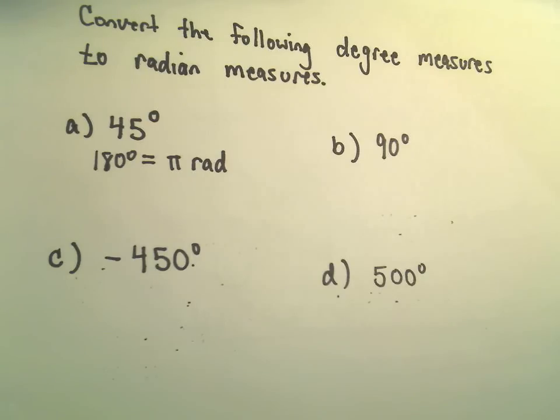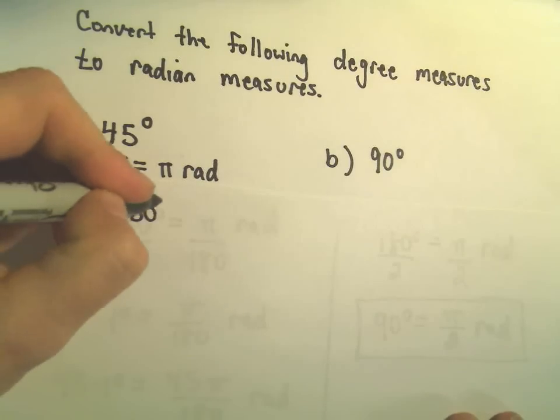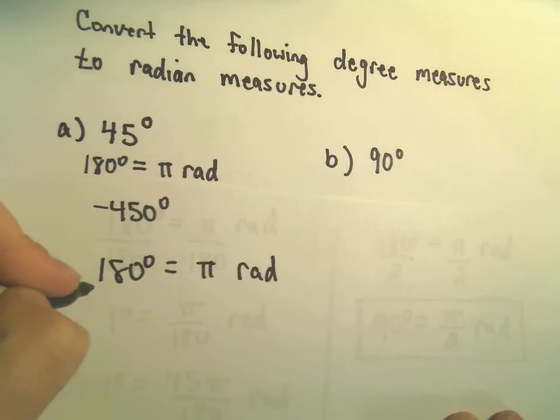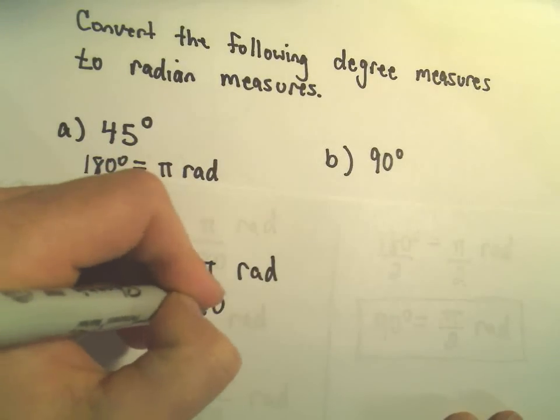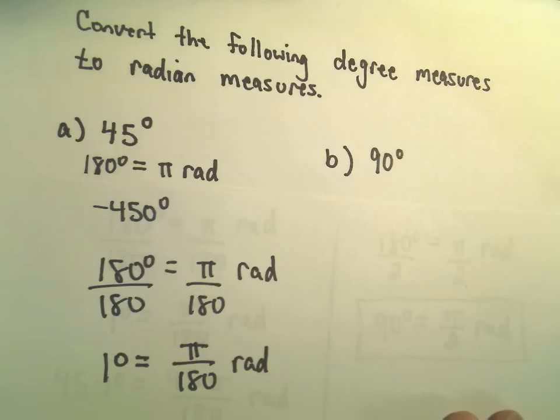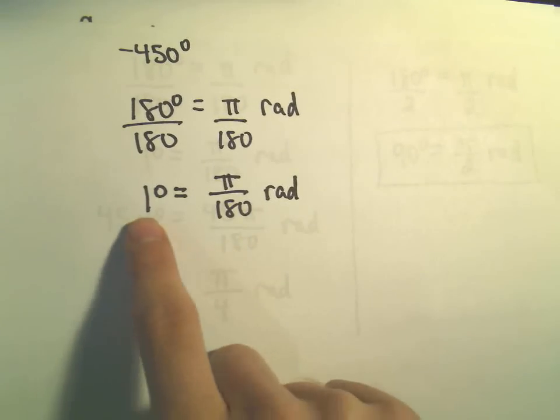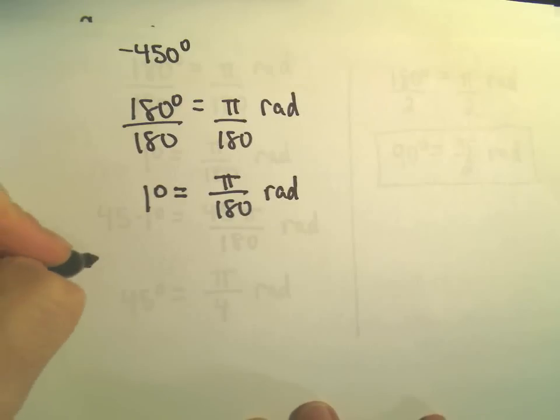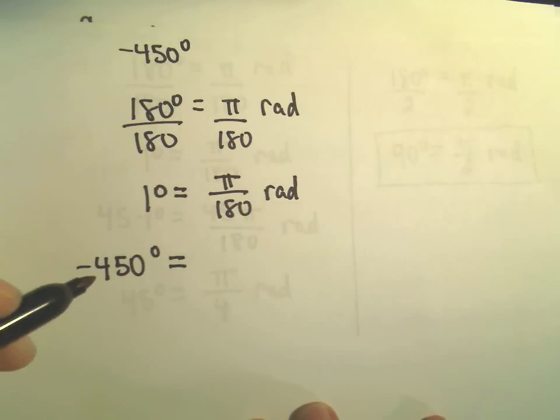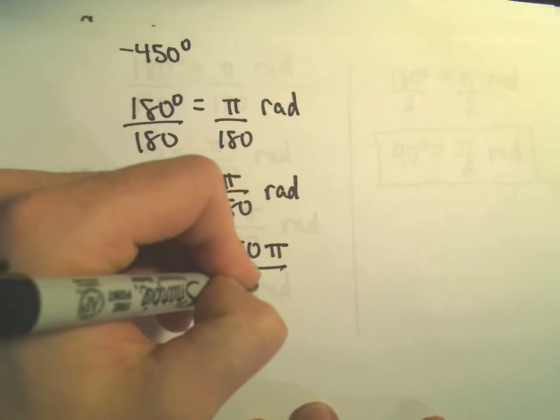Let's see, a couple more here. We've got negative 450. So negative 450 degrees. I'm going to start with 180 degrees equals pi radians. I'm just going to divide both sides by 180, just like we did. So 1 degree is going to be pi over 180 radians. But I don't want 1 degree. I need negative 450. So I'm just going to multiply both sides by negative 450. So that will give me negative 450 degrees on the left. And then I'm going to have negative 450 pi over 180 radians.